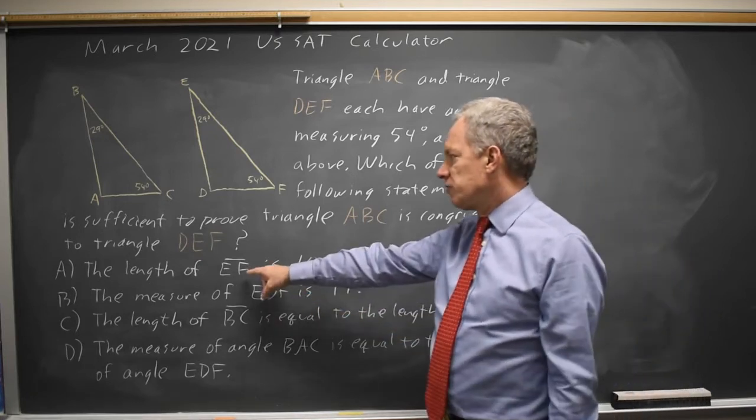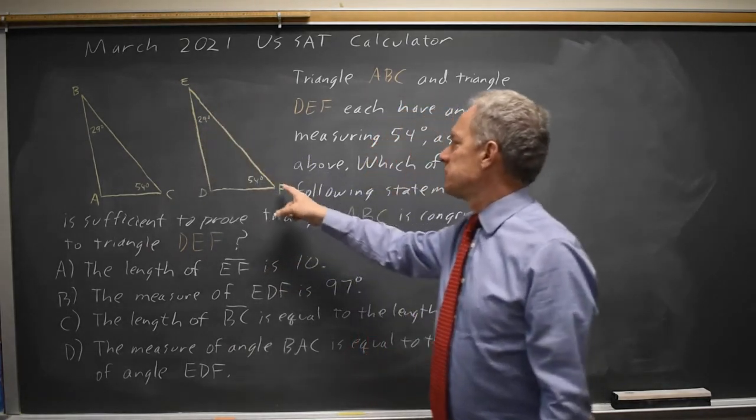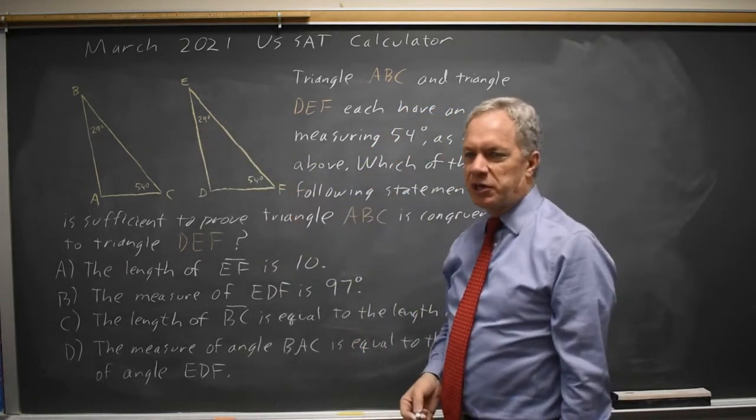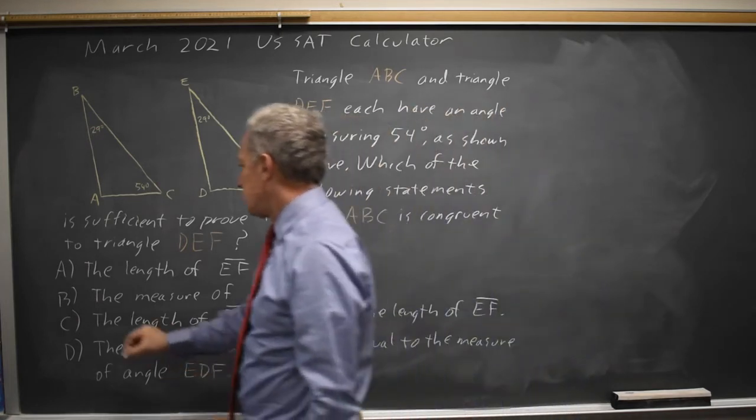Choice A, the length of segment EF is 10. That does not help us because it doesn't tell us how that compares to the length of the corresponding segment in the first triangle. So choice A is not our answer.